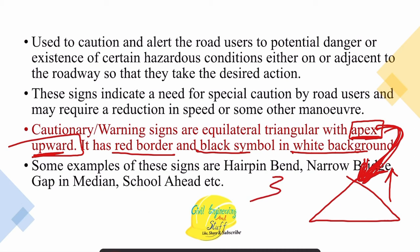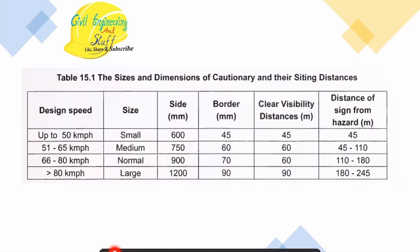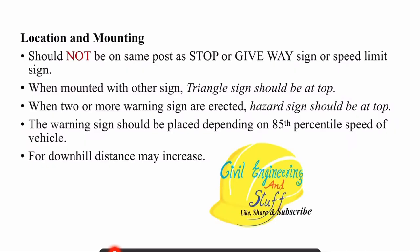Examples of cautionary signs include hairpin bend, narrow bridge, and median full-head signs. Another example is a wild animal area sign — equilateral triangle, red border, white background, black symbol, apex upward. Again, dimensions are specified with respect to speed. Regarding location and mounting: warning signs should not be on the same post as a stop or give way sign — this is very important.